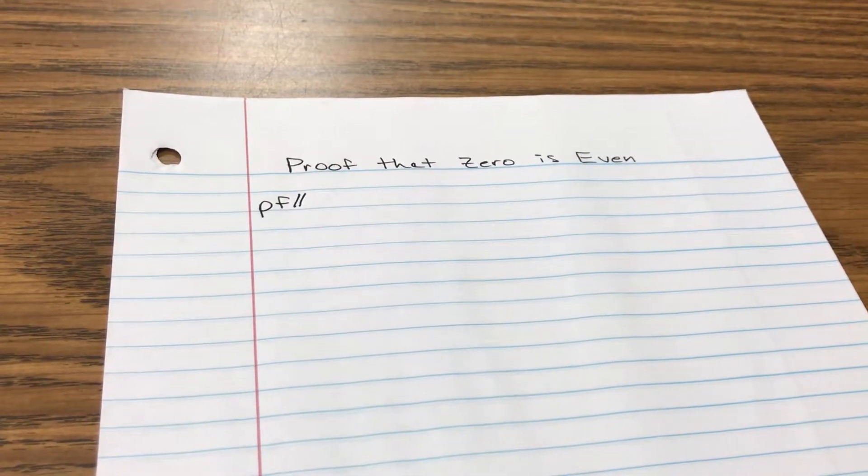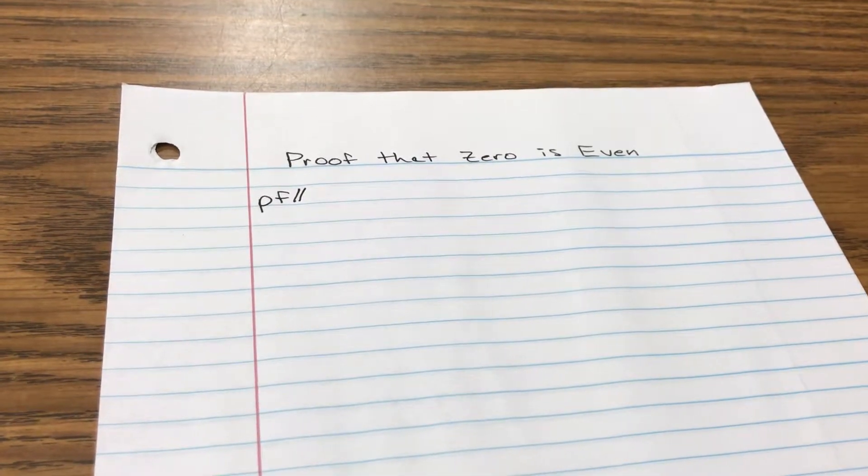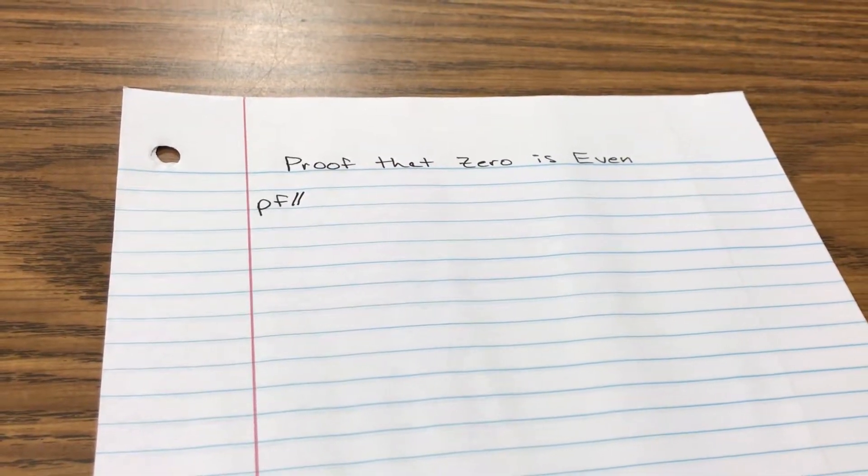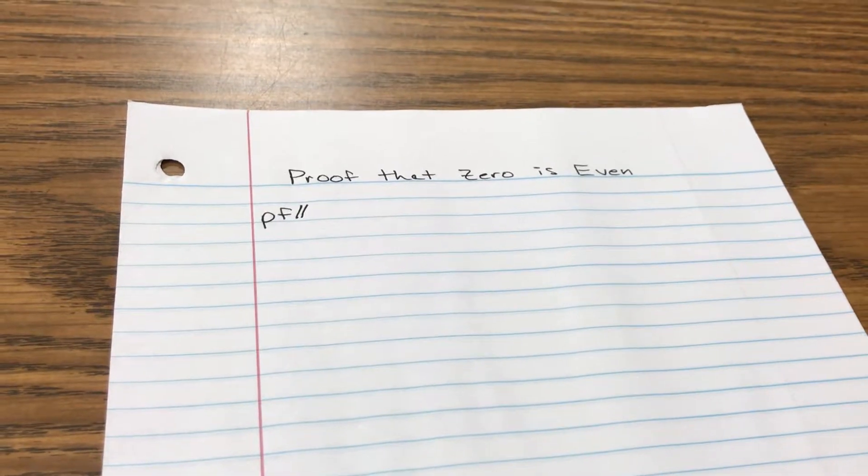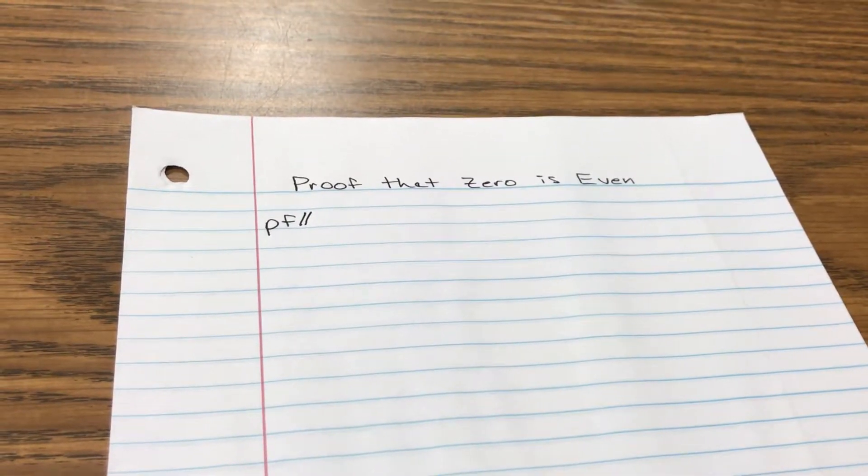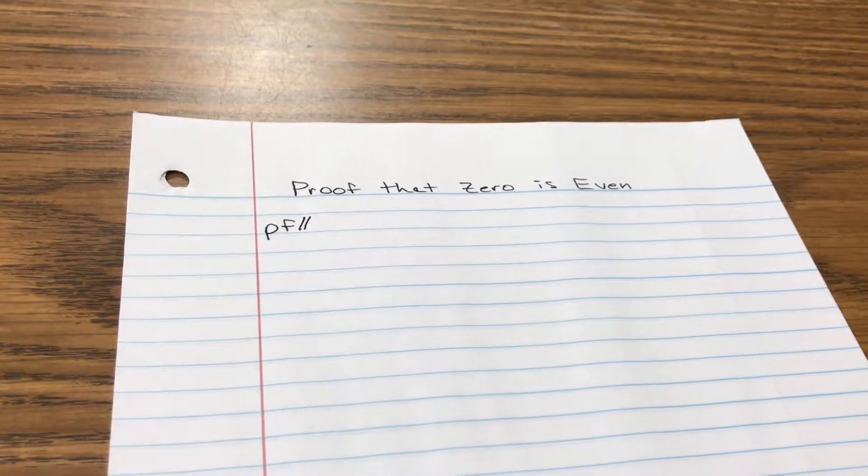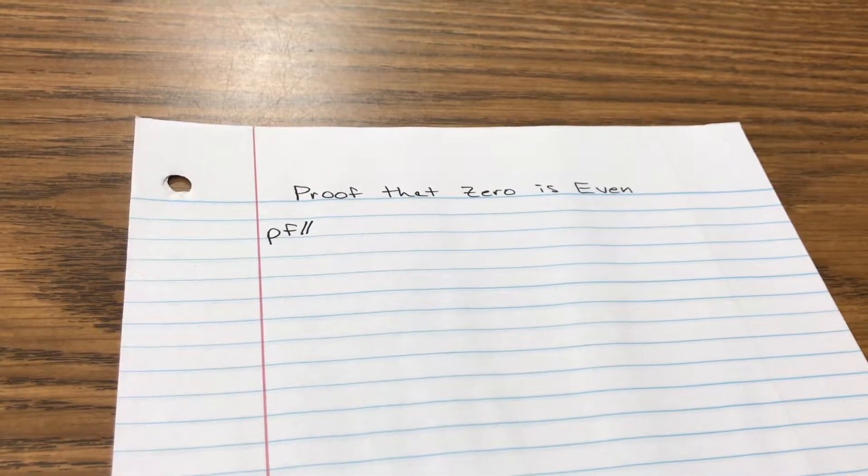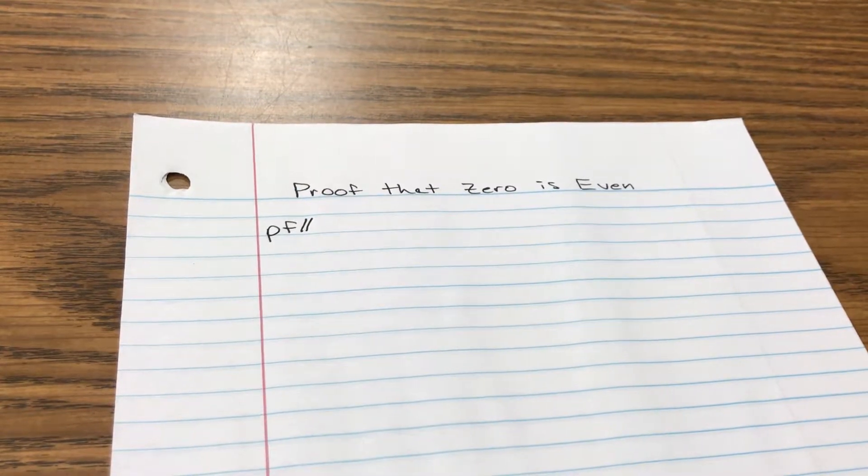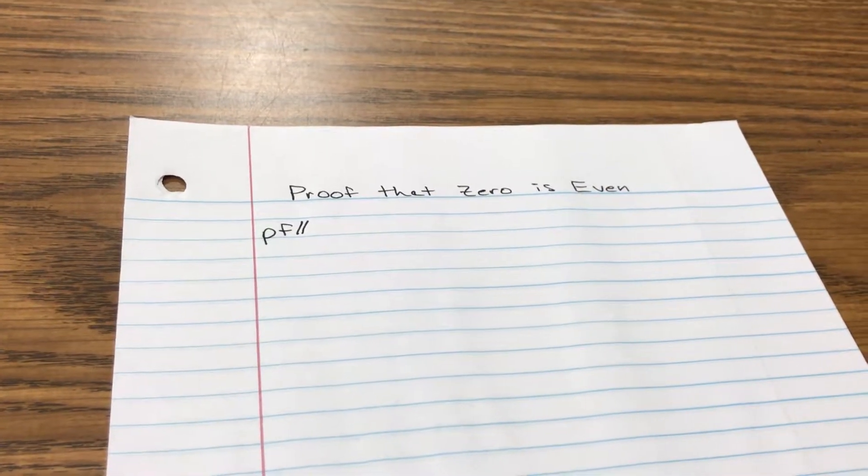Even the negatives of them are even, like negative two and negative four. But what about zero? Is it just that it's divisible by two? Because we also know that zero can be divisible by any positive integer or negative integer, just not zero. So what is the proof that zero is actually an even number?